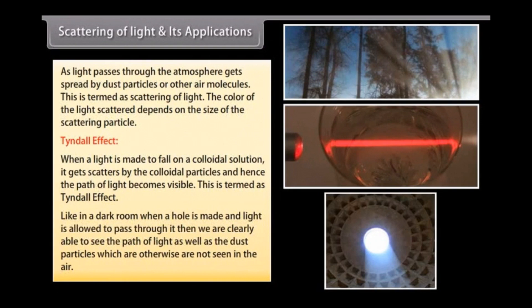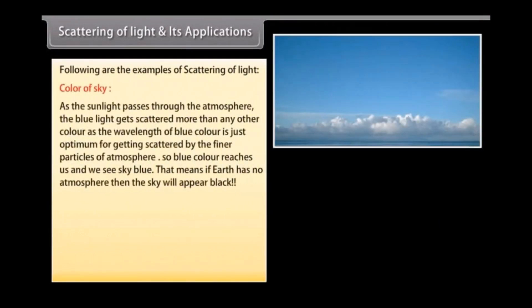For example, in a dark room when a hole is made and light is allowed to pass through it, we are clearly able to see the path of light as well as dust particles which are otherwise not visible in the air. As sunlight passes through the atmosphere, blue light gets scattered more than any other color because its wavelength is just right for scattering by the finer particles of the atmosphere — so blue color reaches us and we see the sky as blue.